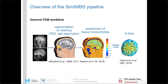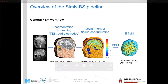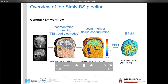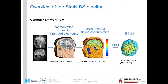This anatomical model must be converted into a physical model by assigning conductivities — for example, scalp has a conductivity of around 0.4 S/m, skull a very low conductivity of 0.01 S/m, and CSF has the best conductivity. Gray and white matter are somewhere in between. You also have to specify where the TMS coil or electrodes are placed on the head, and assign the currents flowing into and out of those electrodes.